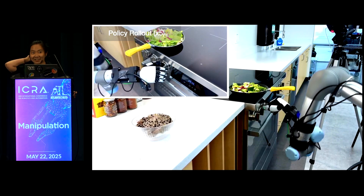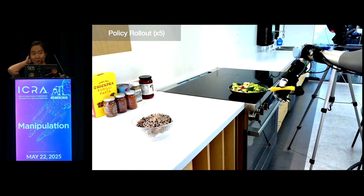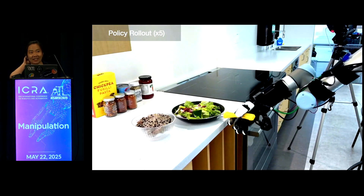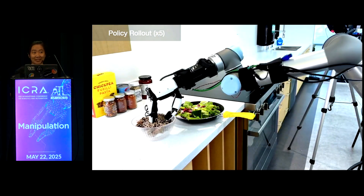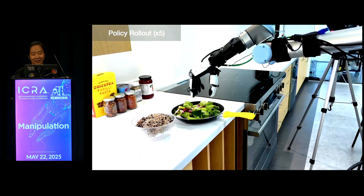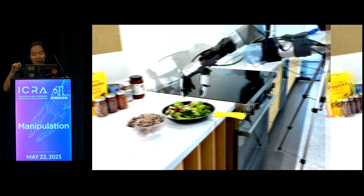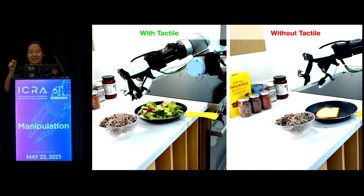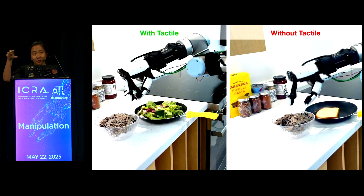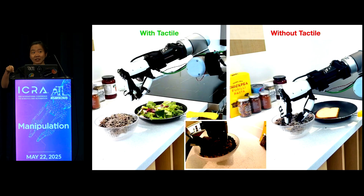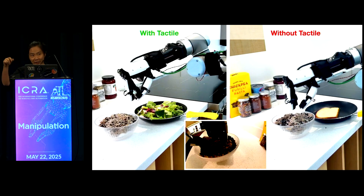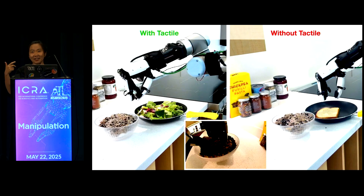Here is a quick visualization of the learned policy trained on data collected by DEXUMI. On the website you can see many more examples. For this particular task, the last step of picking up salt from the bowl turns out to be surprisingly hard, especially without tactile sensors, because vision is partially occluded at that step — highlighting the necessity of using tactile sensors.